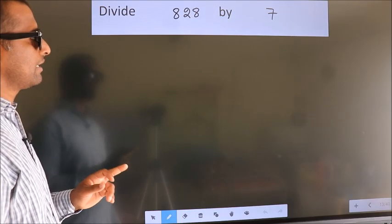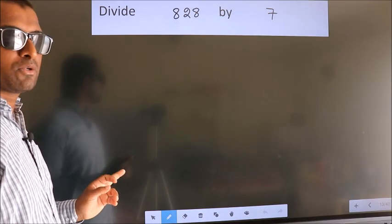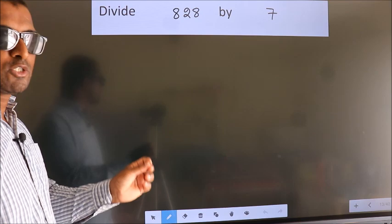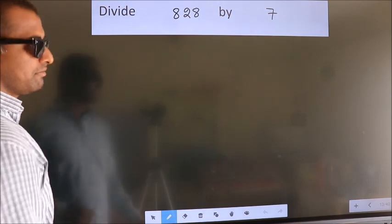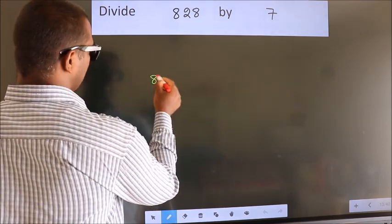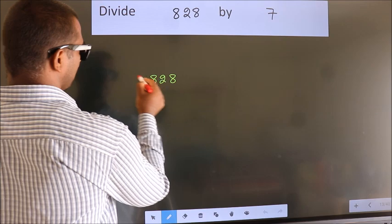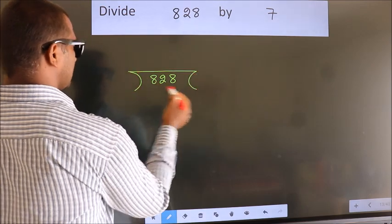Divide 828 by 7. To do this division, we should frame it in this way. 828 here, 7 here.